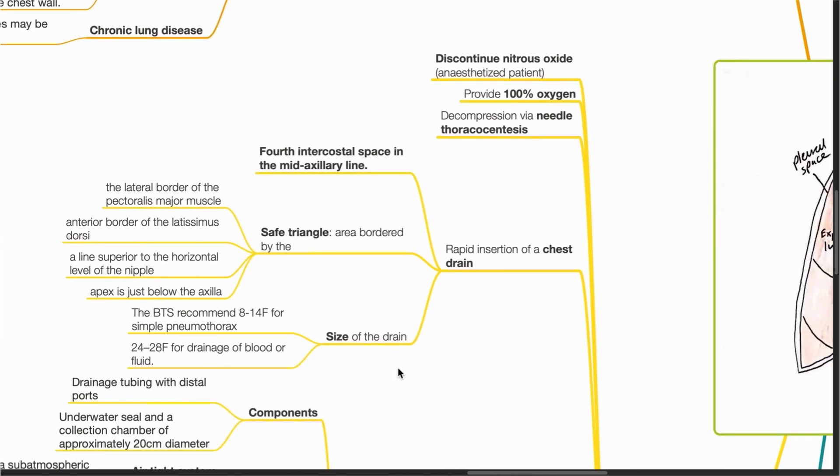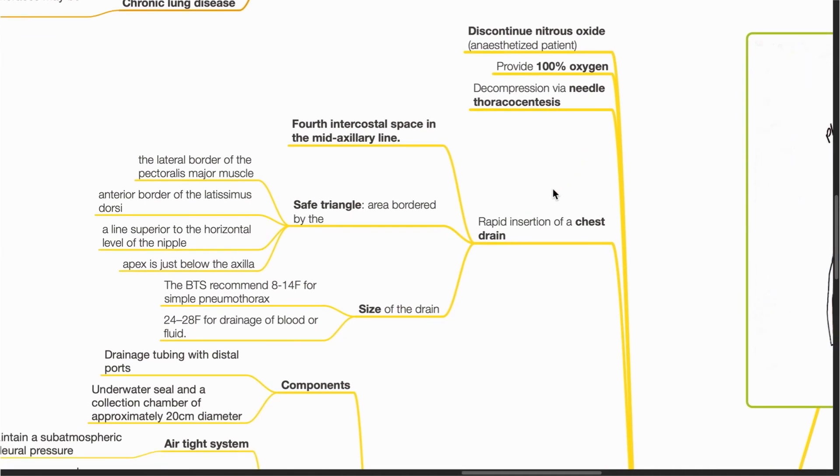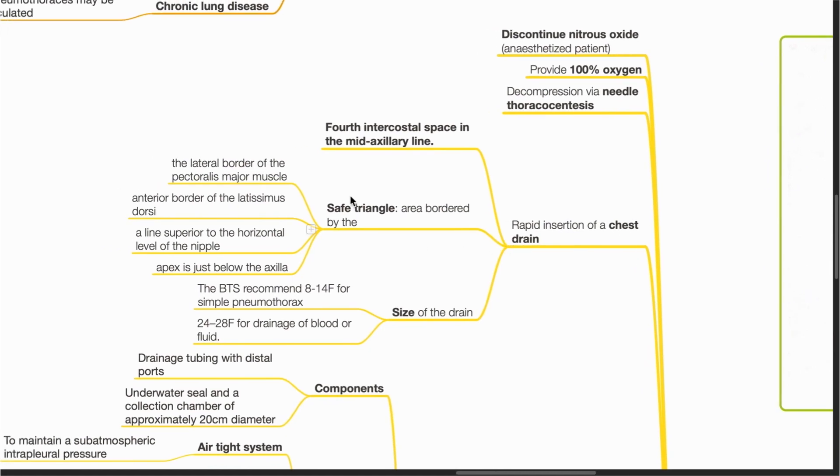The management of pneumothorax. First, discontinue nitrous oxide if used, provide 100% oxygen and decompress via needle thoracosynthesis. Rapid insertion of a chest drain should follow, inserted at the safe triangle.